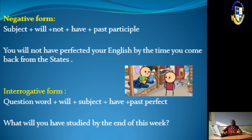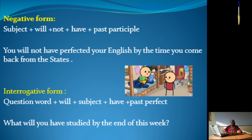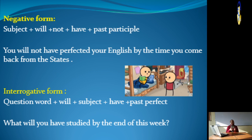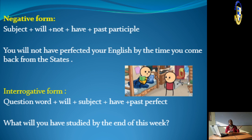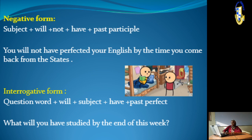The interrogative form is: question word + will + subject + have + past participle. For example: 'What will you have studied by the end of this week?' You're at the beginning of the week, and I ask what you will have covered by the end — even if you haven't reached it yet. That's all for today's lesson. I hope you gained much information and understood everything. See you next time, bye!